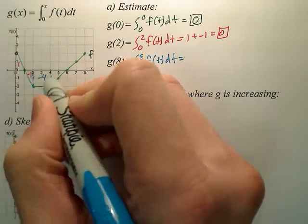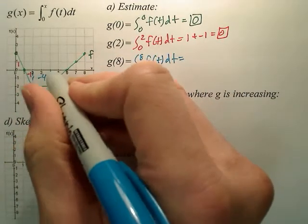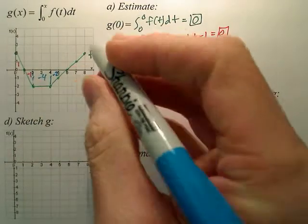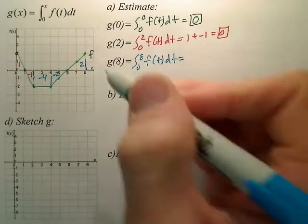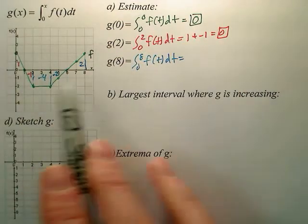This right here would be a negative 4 for this square. The area of this right here would be a negative 2. And the area of this triangle right here looks like it'd be a positive 2.